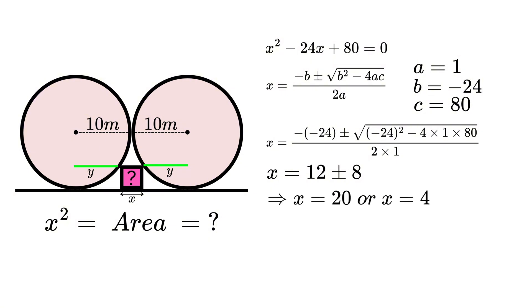We know that x cannot be larger than our radius of 10, so x = 4 is our result. To find the area of our square, we simply need to square x, giving us 16 meters squared.